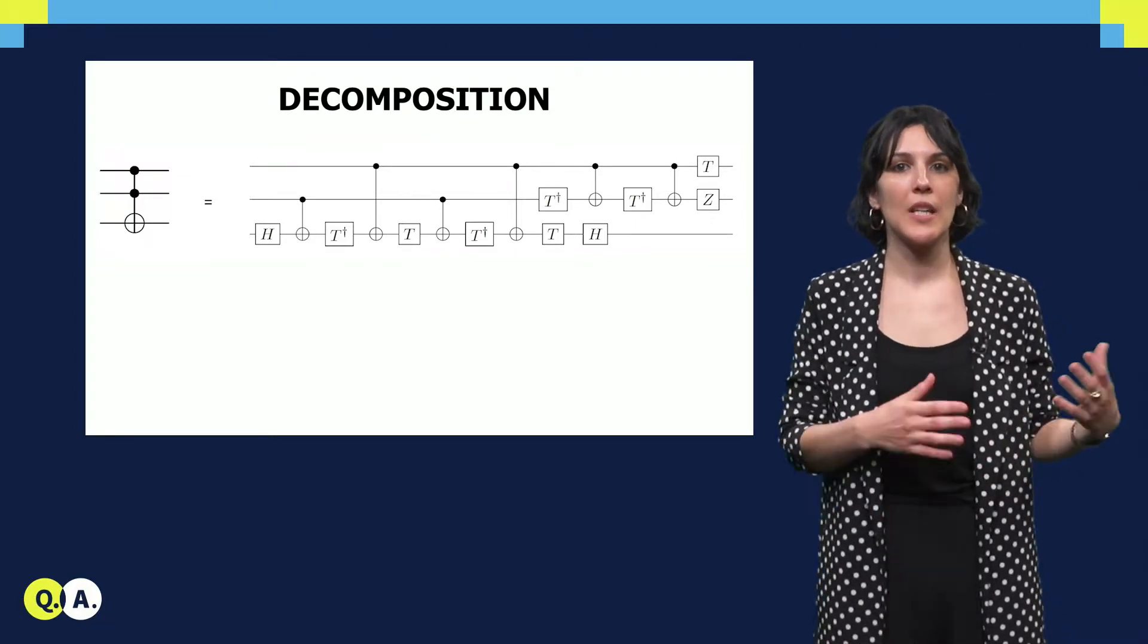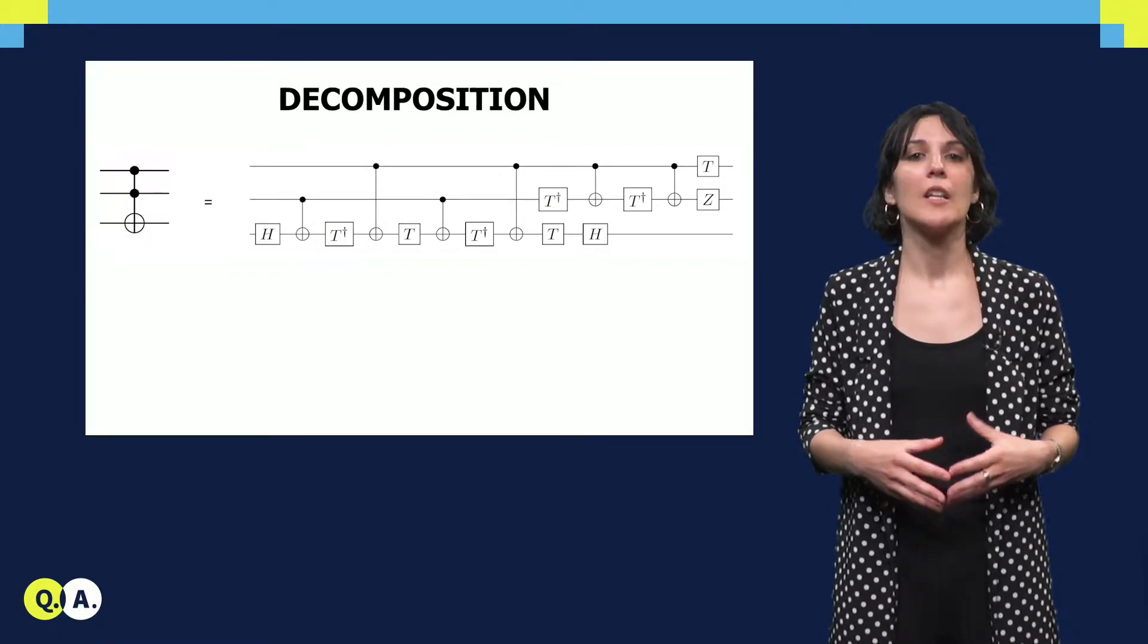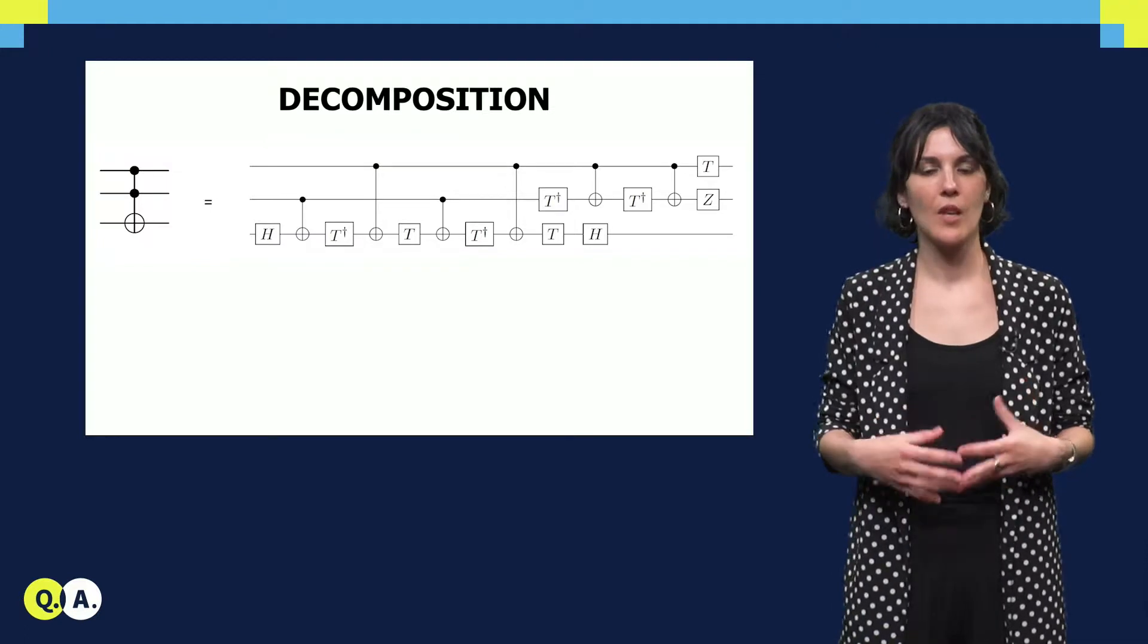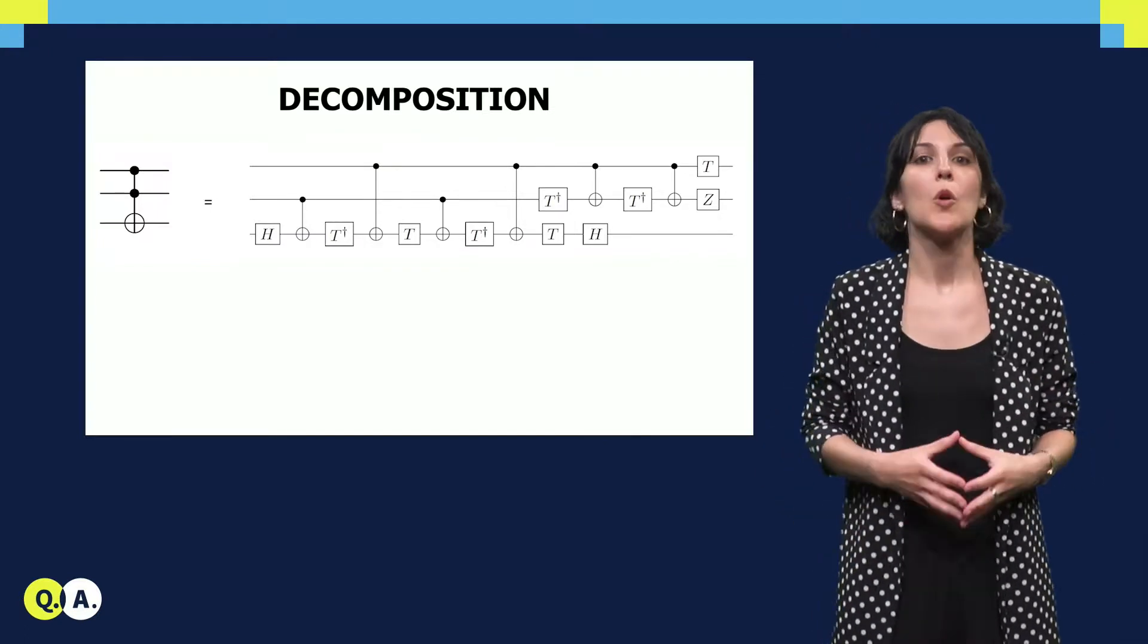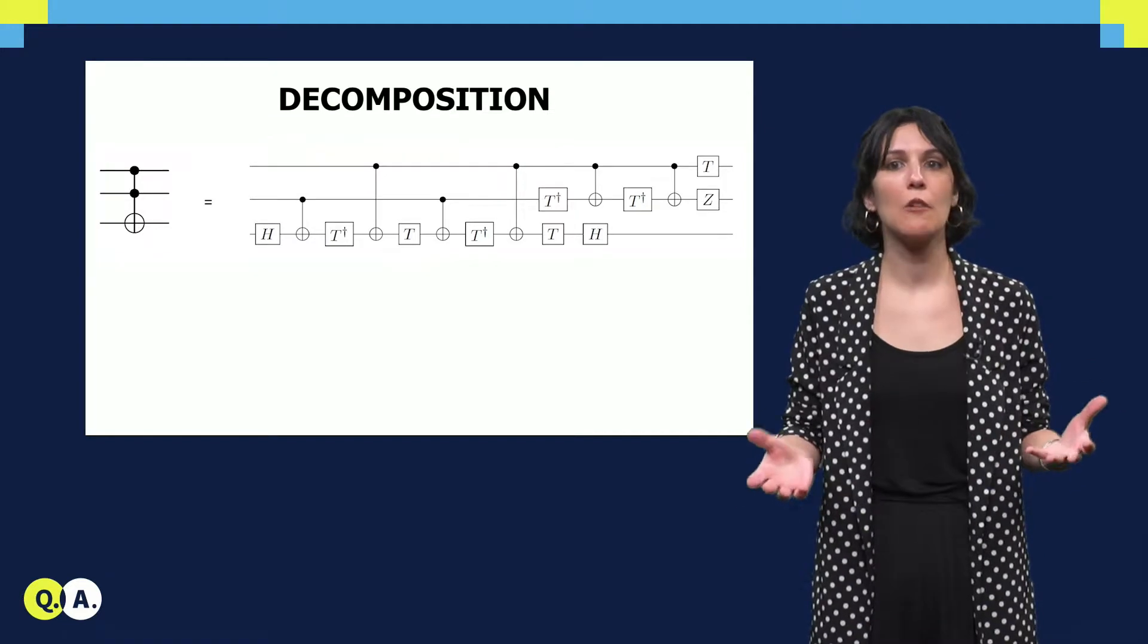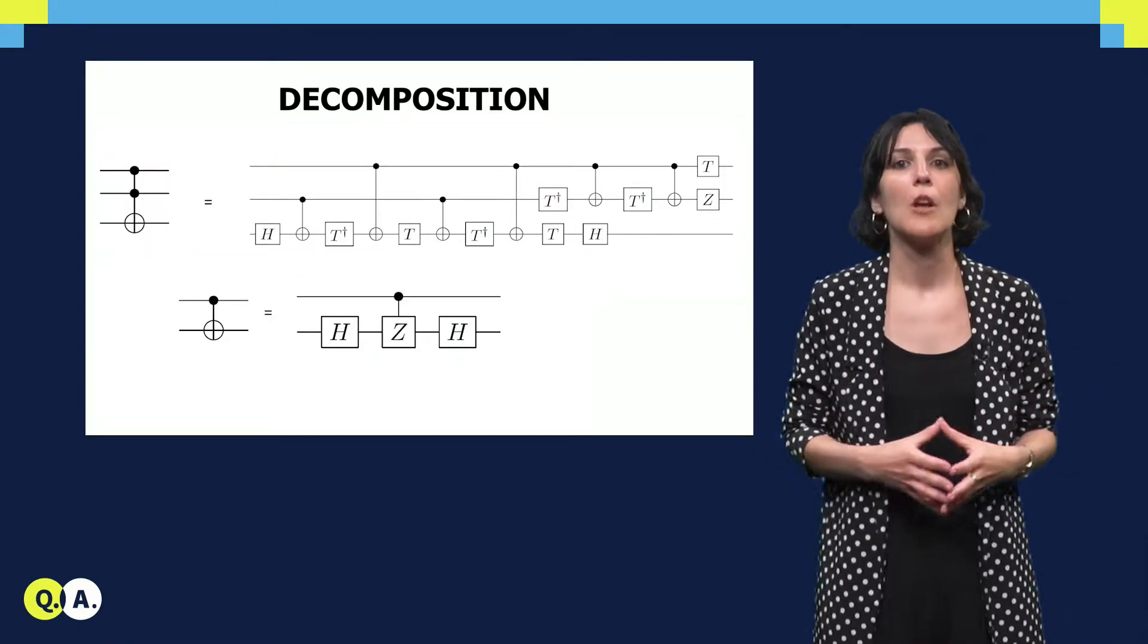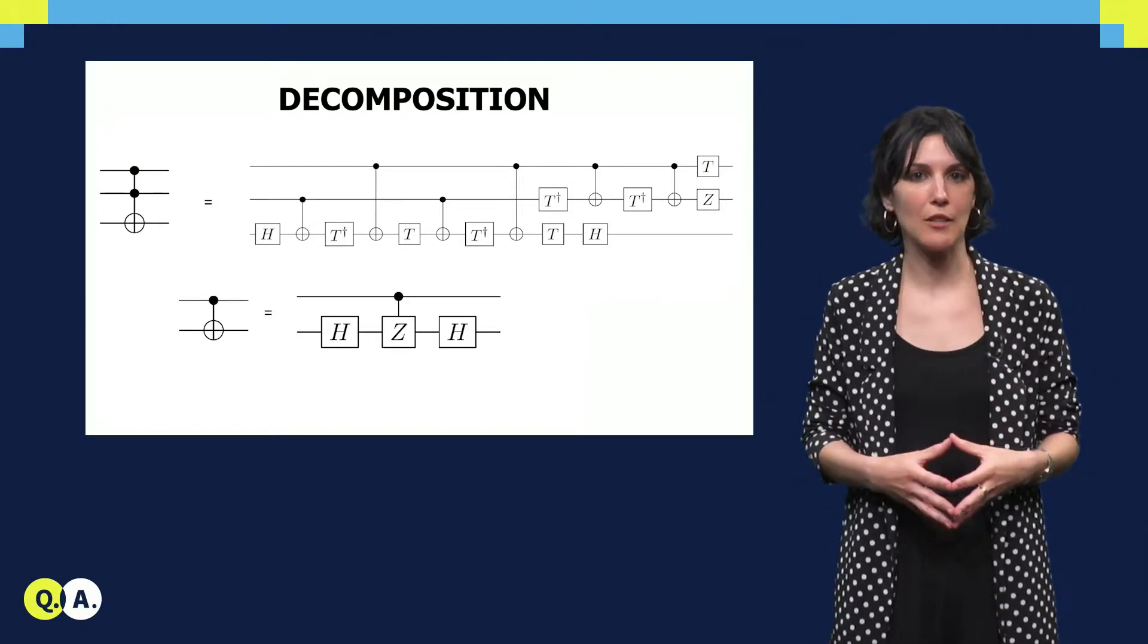Here you can see an example in which a Toffoli gate is decomposed in a circuit that consists of Hadamard, T, T-dagger and CNOTs. However, this circuit cannot be run yet on the quantum chip. We still need to go one step further and express such a circuit in a series of elementary or physical operations that our hardware can support. For instance, a CNOT is decomposed into two Hadamard and a CPhase gate.